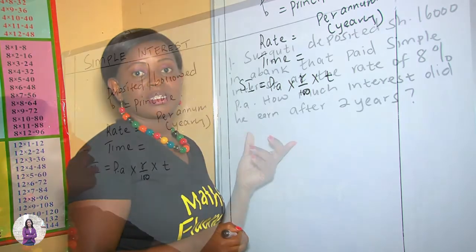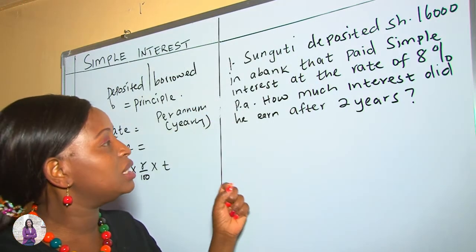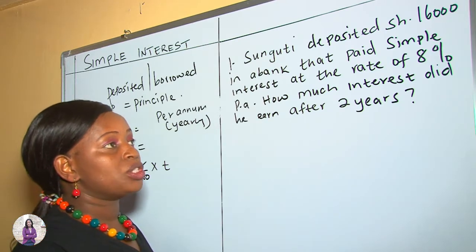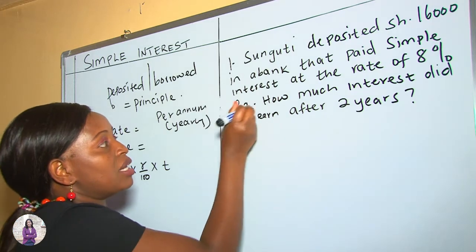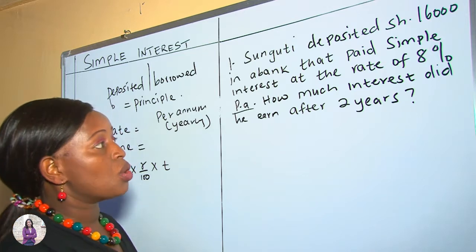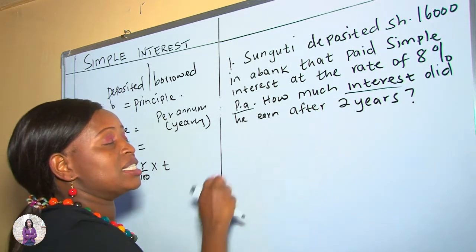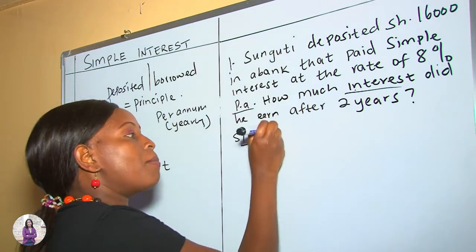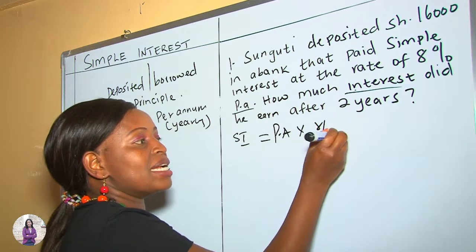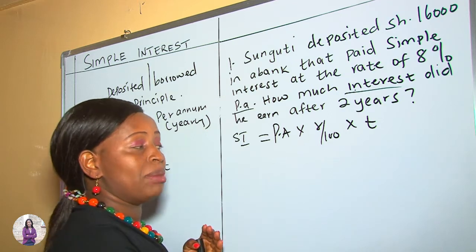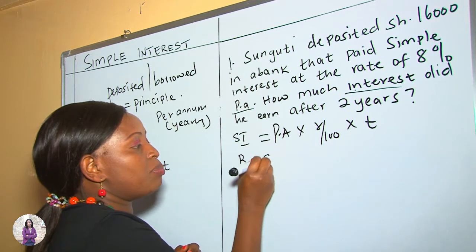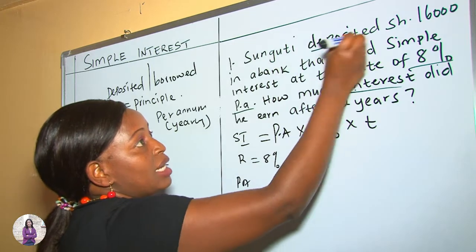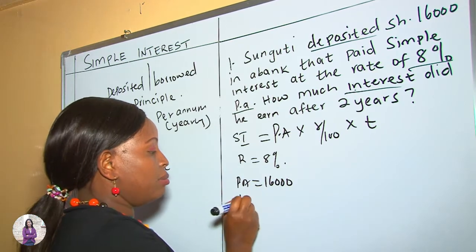Let's get some examples. Guten deposited 16,000 shillings in a bank that paid simple interest at a rate of 8% per annum. How much interest did he earn after two years? Per annum means on a yearly basis, so the interest is generated on a yearly basis. The interest is what we have called simple interest, SI. So how do we get simple interest? SI equals principal amount multiplied by rate over 100 times time. In this case, our rate is 8%, our principal amount is 16,000, and our time is 2 years.